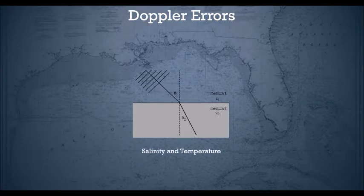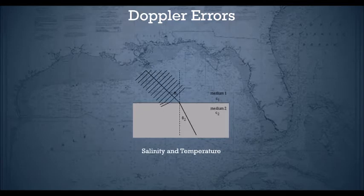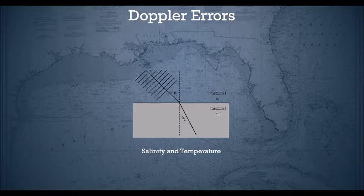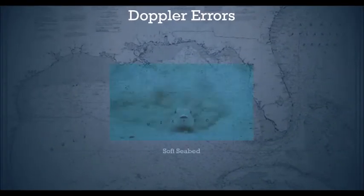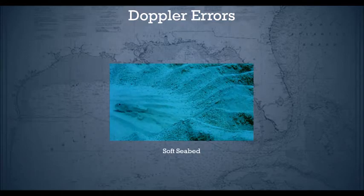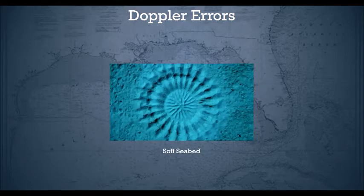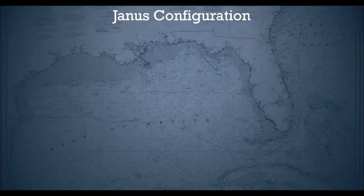Doppler is also affected by the fact that EM waves travel differently in different mediums of water. So if the salinity or temperature changes, there will be errors because the speed of EM waves changes. Some newer versions do take into account the temperature of the water. Doppler is also affected by the nature of the seabed — if it is a soft seabed, the EM waves don't come back on time and you have errors.